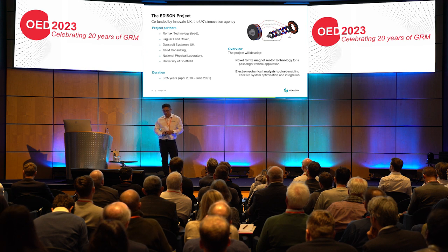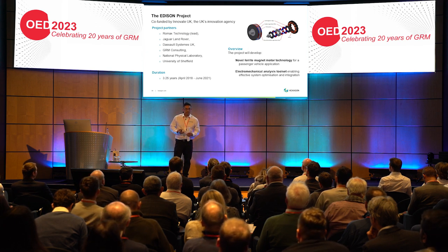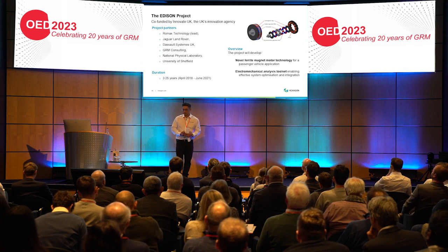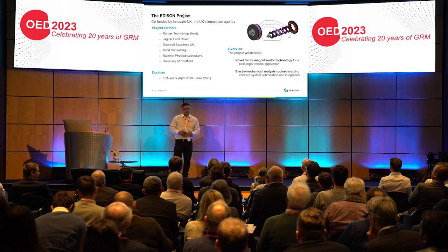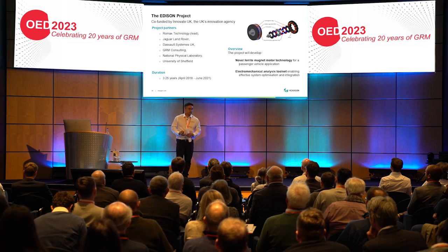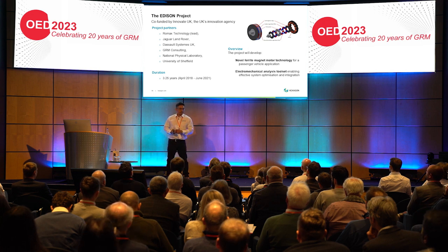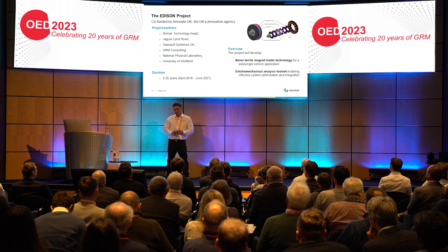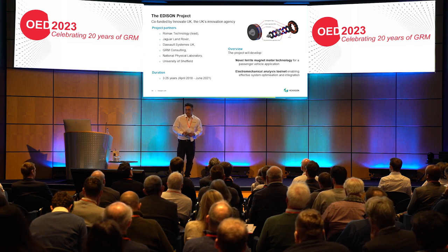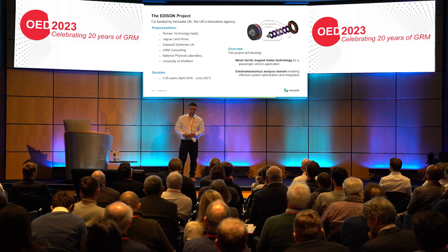In terms of the Edison project, in 2018 Romex put together a consortium to run this research and development project. We were the lead, responsible for design development of the electrical machine and assessment of overall performance. Jaguar Land Rover provided the benchmark, design specification, and vehicle targets. Source Systems provided expertise in simulation of the electrical machine for air gap flux forces and noise performance. GLM Consulting provided structural optimization expertise, NPL provided material testing for magnets, and the University of Sheffield provided electrical machine design expertise and test facilities.